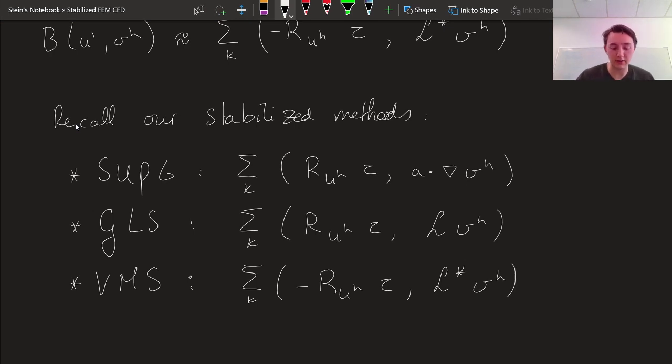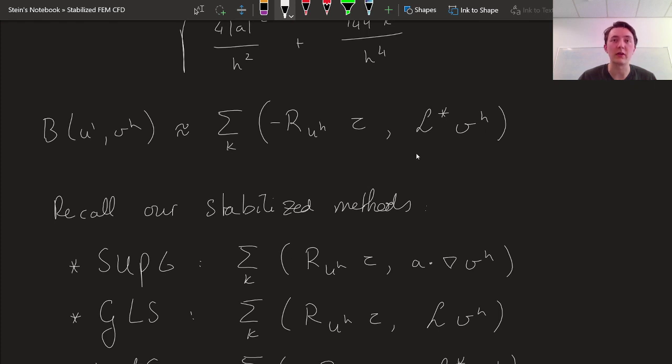So now we understand this last one, the variational multiscale method. And we understand where it comes from and that is precisely what we obtained in the last few lectures. So this is the same thing.